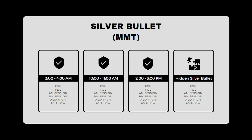When you look at the first one, the whole concept of silver bullet is for it to take out whatever liquidity it's going for. So we have 3 to 4 a.m., 10 to 11 a.m., 2 to 3 p.m., and then the hidden silver bullet time. The objective of all of these is to take out either the previous day high or low, a.m. session, p.m. session, Asia high, or Asia low. That is the concept of silver bullet — it's a specific window in time that's going to run for stops.